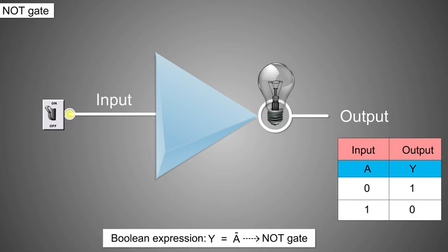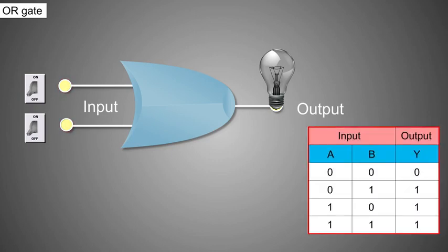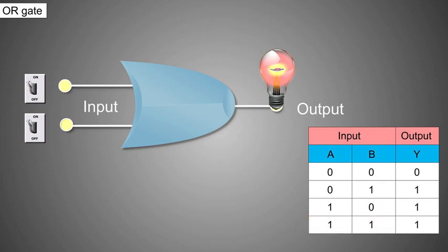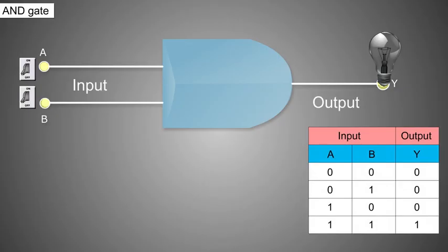The boolean expression Y = Ā represents the NOT gate. The OR gate has at least two inputs with one output. The logic symbol and truth table for the OR gate are as shown. The output is 1 when either or both of the inputs are 1 — that is, if any of the inputs is high, the output is high. The boolean expression Y = A + B represents the OR gate.